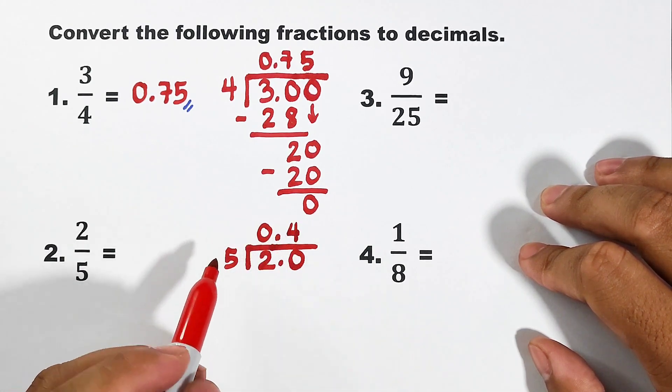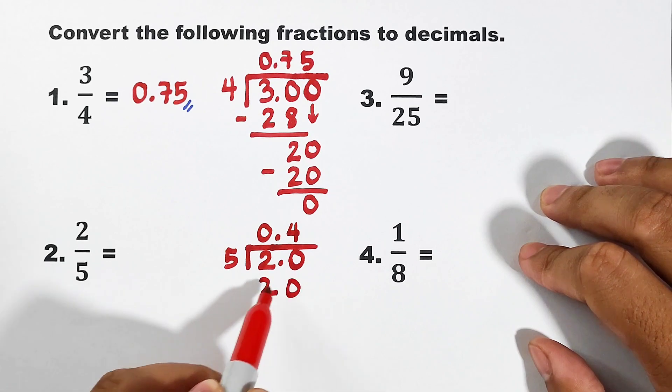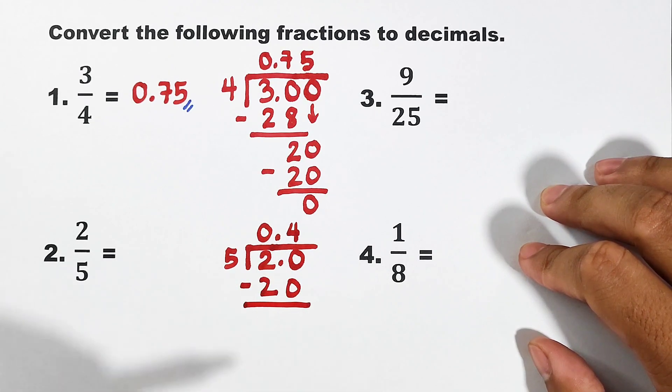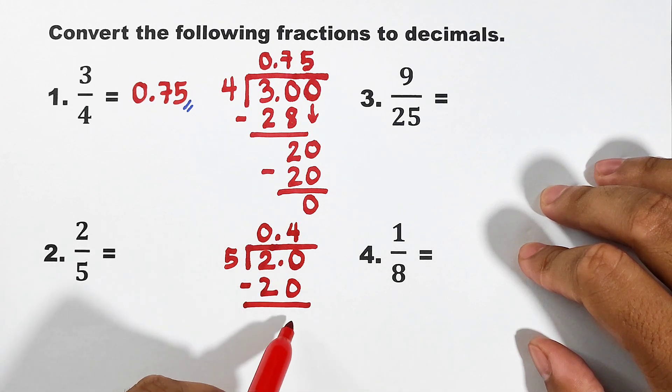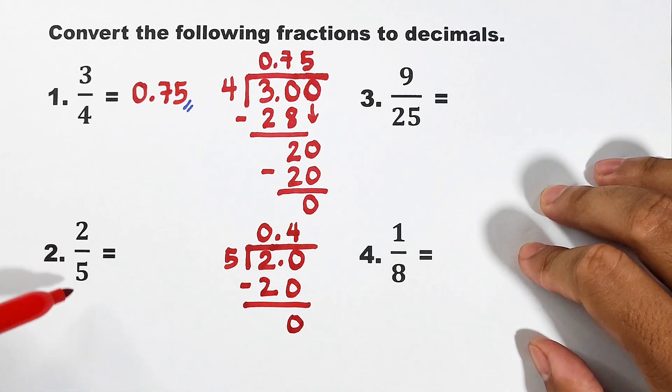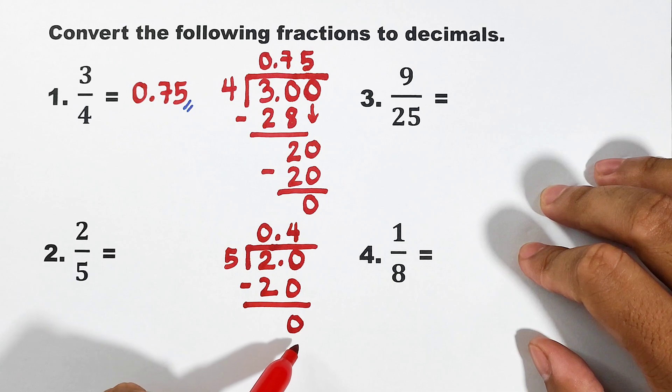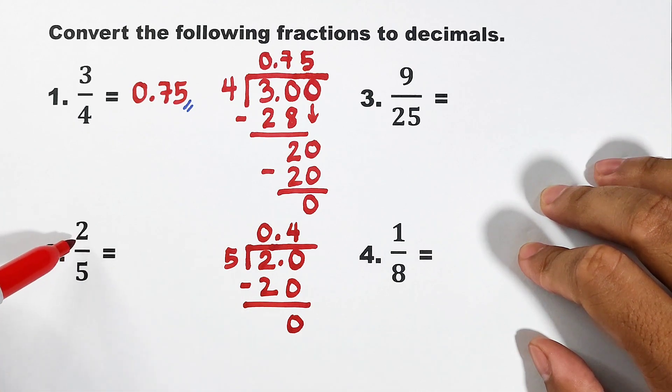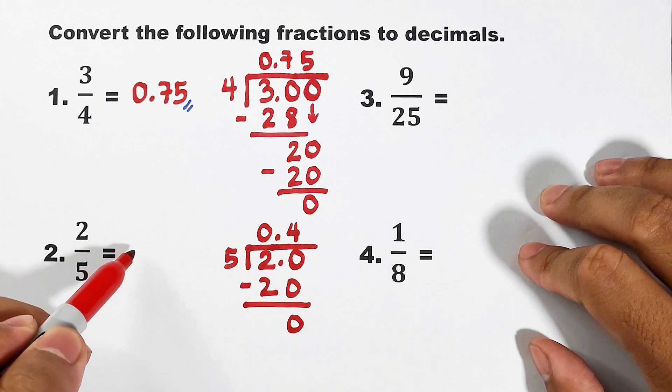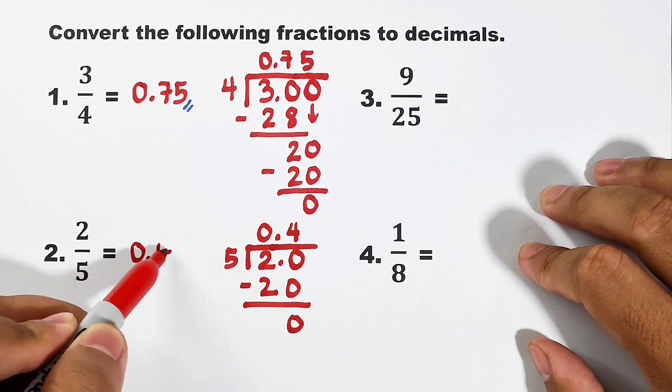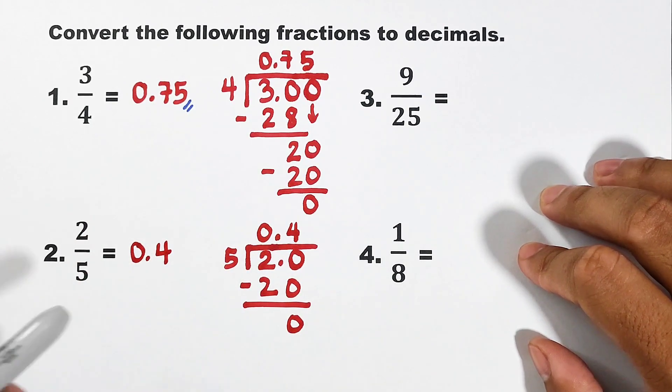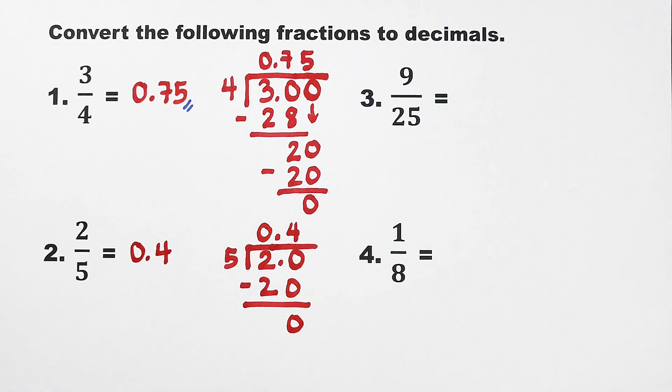20 divided by 5 is 4. And 4 times 5 is 20. And as you can see, this one is a short division because 20 minus 20 is 0, meaning since the remainder is 0, we will stop dividing it. Your 2 over 5 is simply equal to 0.4. And that is the answer for item number 2.